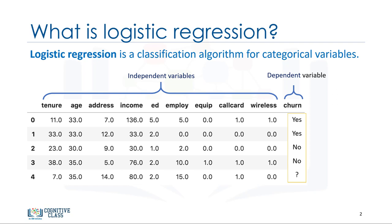Logistic regression is analogous to linear regression, but tries to predict a categorical or discrete target field instead of a numeric one. In linear regression, we might try to predict a continuous value of variables such as the price of a house, blood pressure of a patient, or fuel consumption of a car.